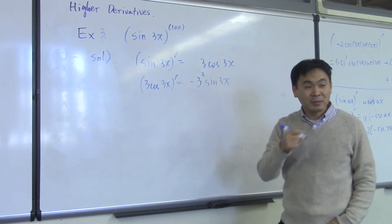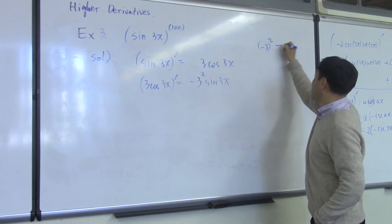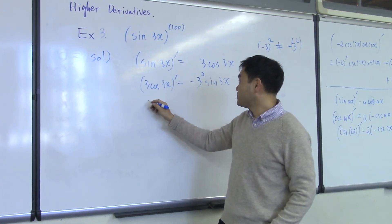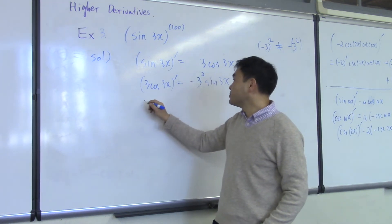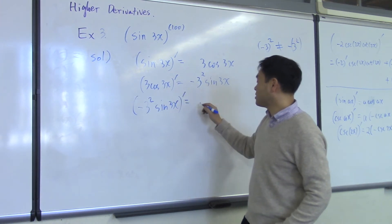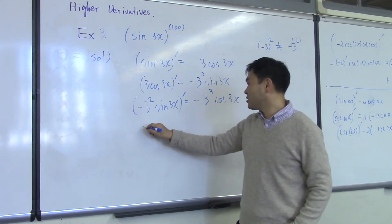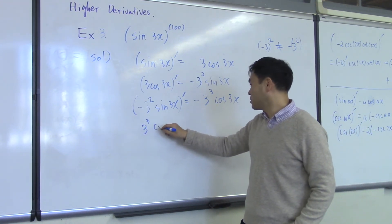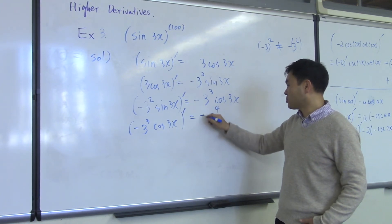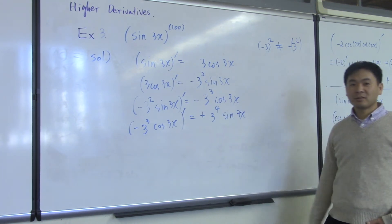If you put it as negative 3 squared instead of 9 — negative 3 squared is not the same as negative 3 squared with parentheses; it's not a positive 9. So this is 3 squared multiplied by negative. Then negative 3 squared sine 3x prime gives you 3 cubed cosine 3x. Differentiate again and you get negative 3 to the 4th power, sine 3x.